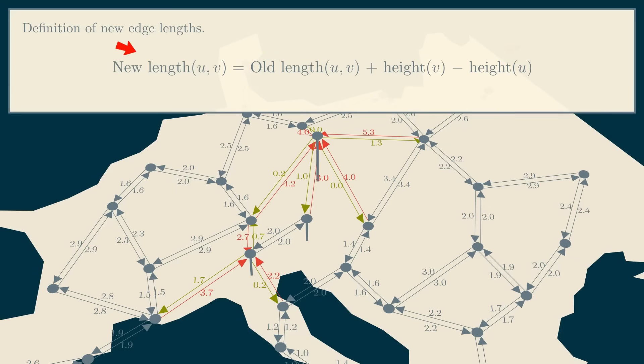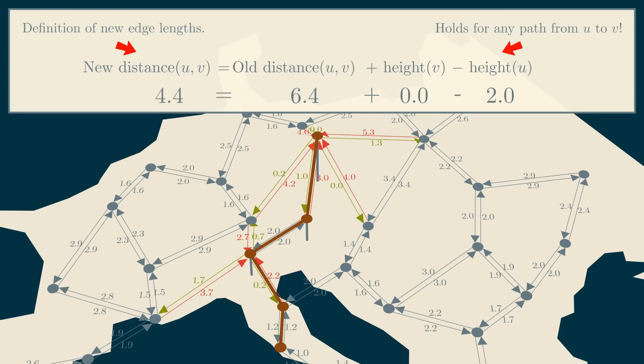This formula will be super important for us, because although we defined it to be true just for edges, it holds for any path. Take this path from Prague to Rome. Originally, its length was 6.4, but because Prague is higher than Rome by two units, the new length of the path, and also the new distance from Prague to Rome, decrease by two. In general, whenever we know the distance between two nodes in the original graph, we can use this formula to compute the distance in the new graph.